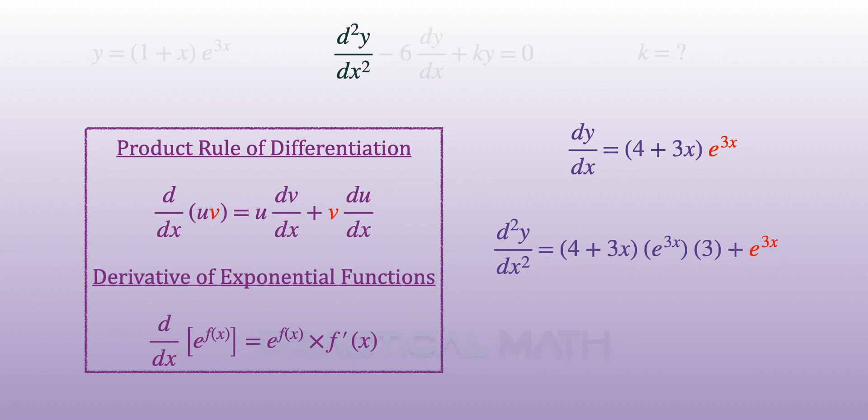Next, we add v, in this case, e to the power of 3x, followed by differentiating u, which is 4 plus 3x, which will give us 3.